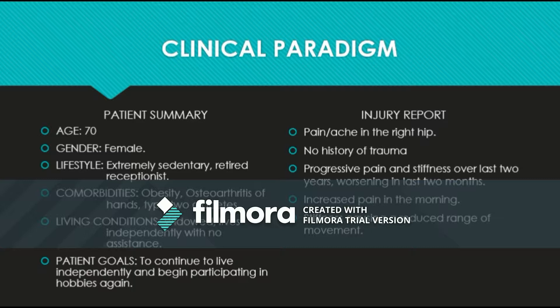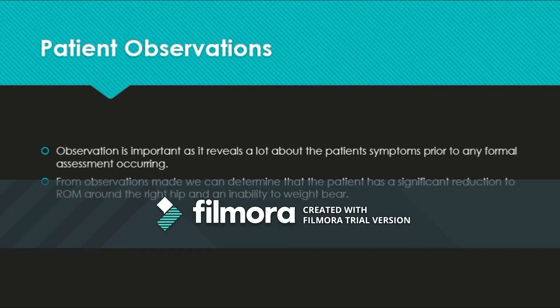On top of complaints of pain, Margaret also finds that there is pronounced stiffness in the affected hip, creating difficulties when walking, standing from a seated position, and squatting down when she is gardening. She is finding that both the pain and stiffness are preventing her from performing numerous activities of daily living and causing negative lifestyle changes, posing further risks to her health.